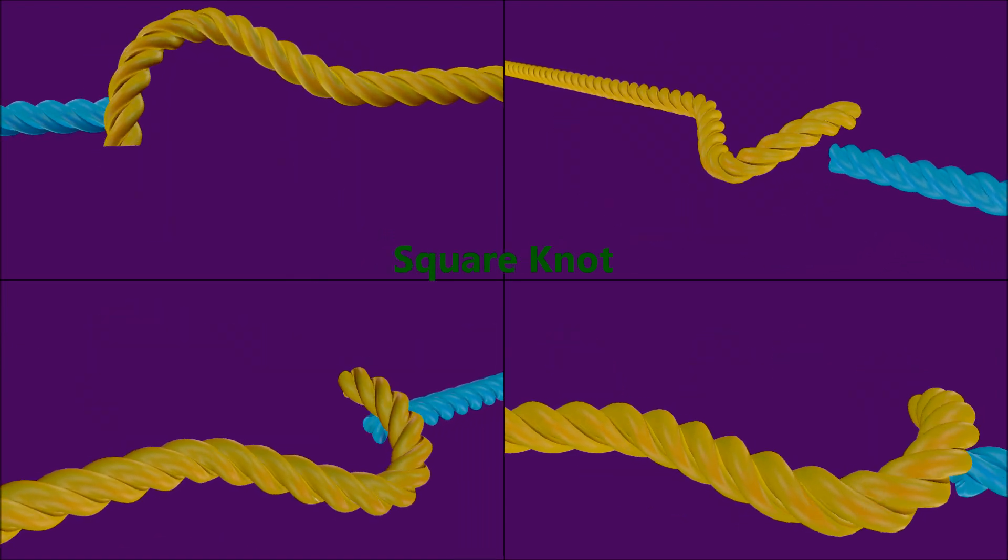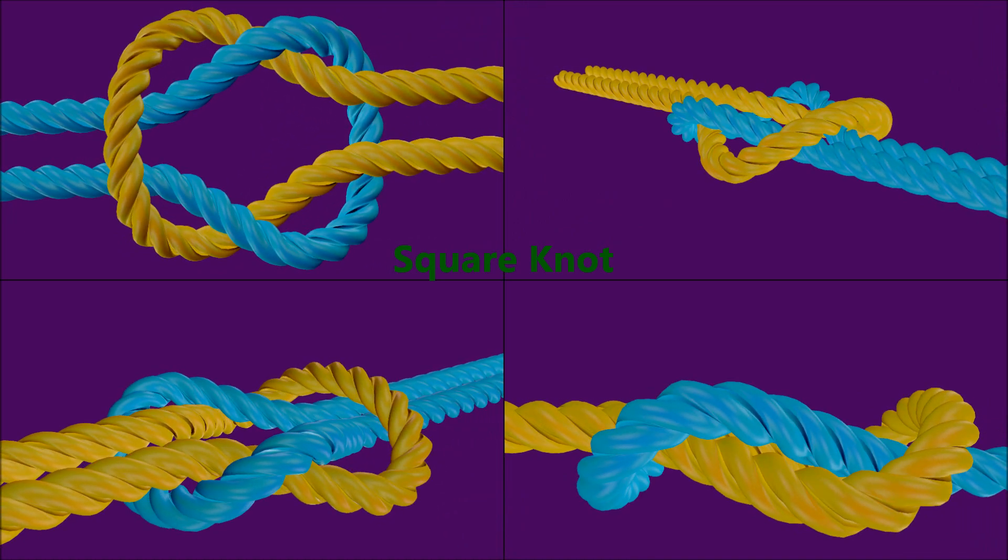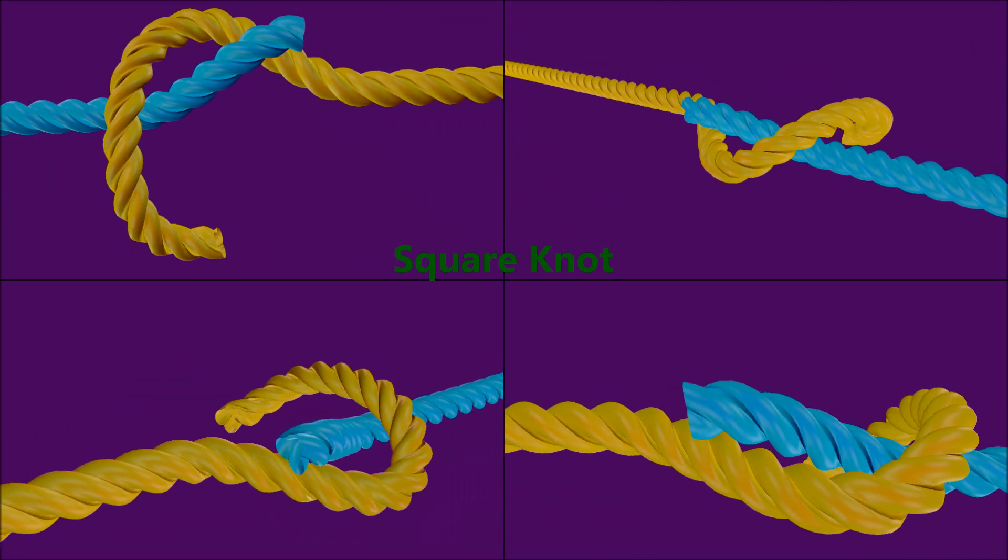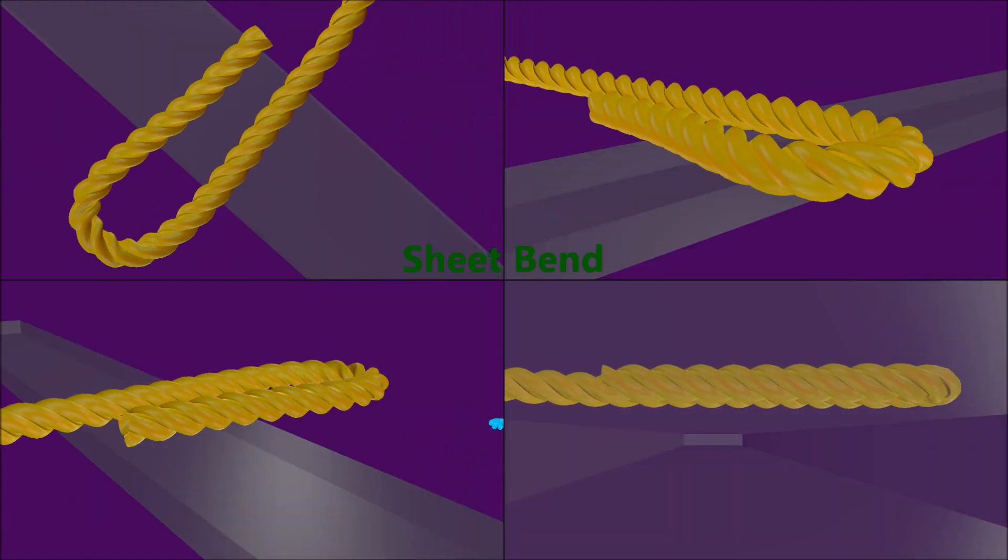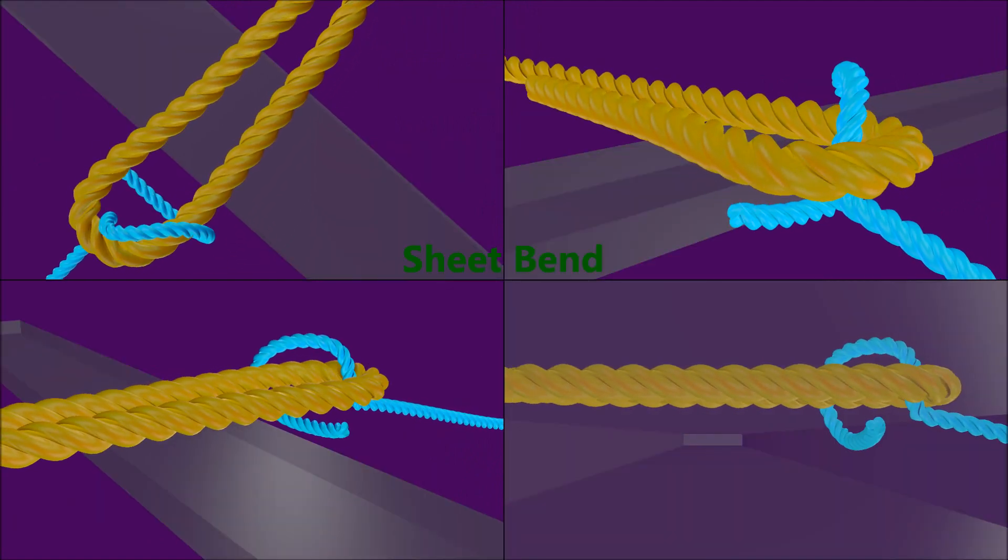The square knot is used to join two pieces of rope. The sheet bend is used to join two pieces of rope of different sizes.